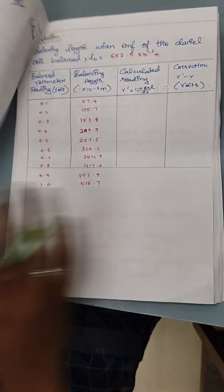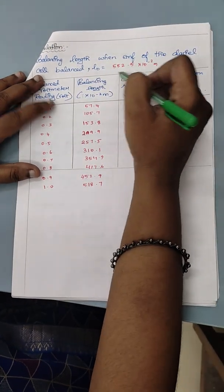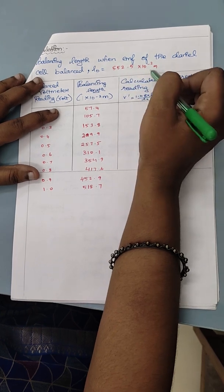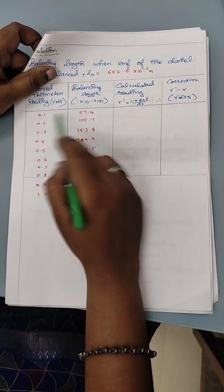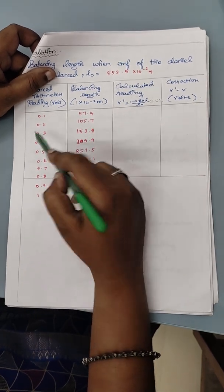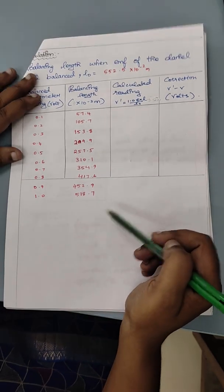So these are the readings we are going to calculate. Balance in length L0 is found out to be 552.5 into 10 to the power minus 2 meter. And for 0.1 in voltmeter reading, 0.1 is 57.4 and 0.2 is 105.1. These are the readings noted now till 1 volt.